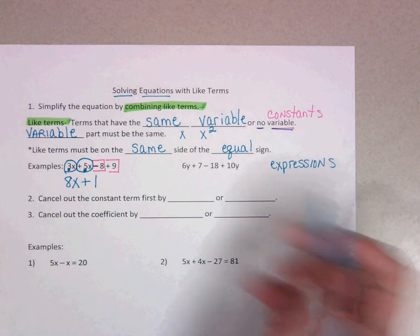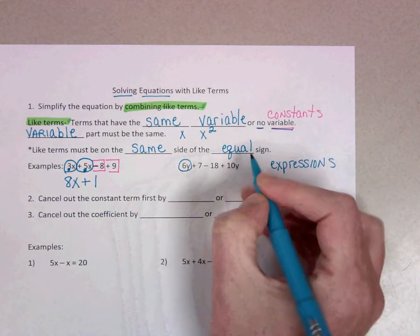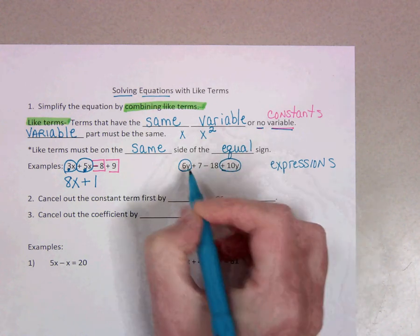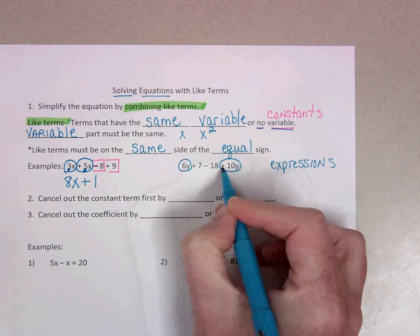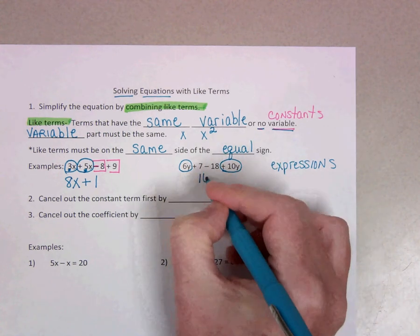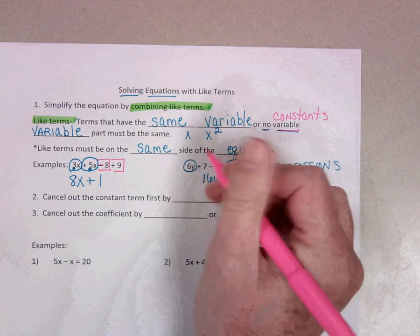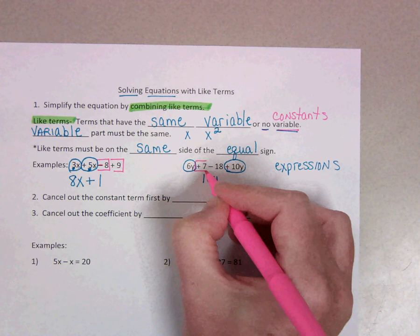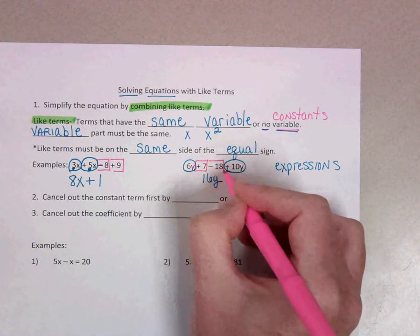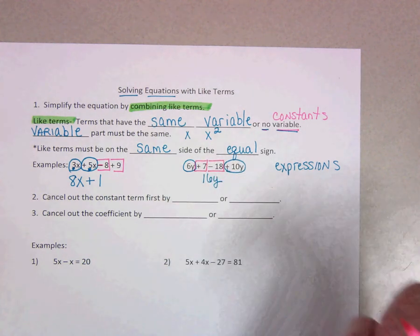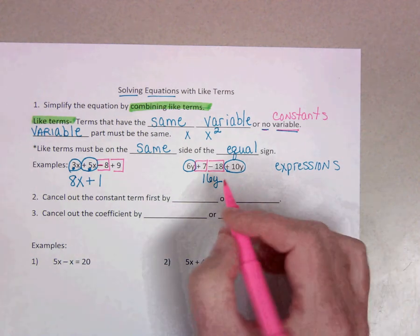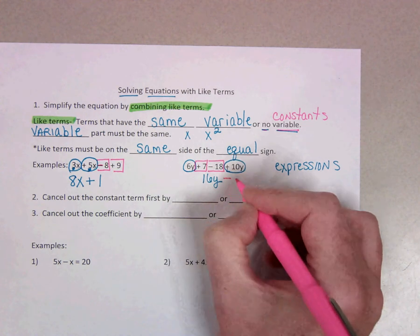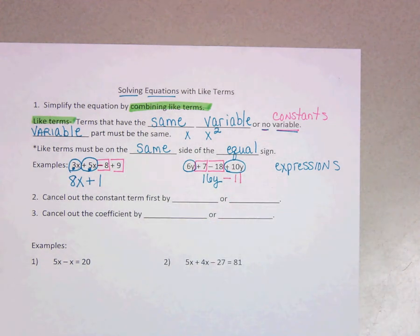Let's look at the other example. We've got 6y and 10y. They both have that y, so 6y plus 10y is 16y. Notice they don't have to be right next to each other. And then we've got positive 7 minus 18. If you're really bad with integers, pick up your calculator and use it. So 7 minus 18 is negative 11.